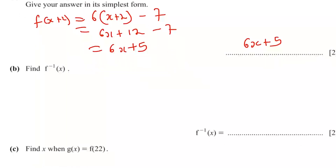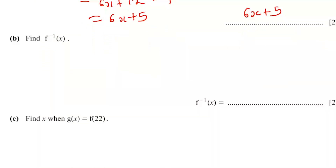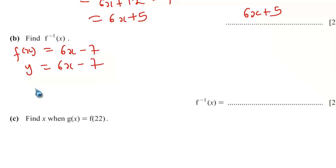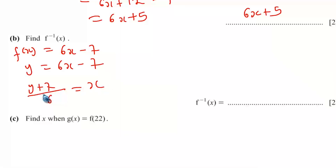Part B: find f inverse of x. We know f(x) equals 6x minus 7. Let y equal 6x minus 7 and make x the subject: x equals (y plus 7) over 6. Replace x with f inverse of x and y with x, so f inverse of x equals (x plus 7) over 6.